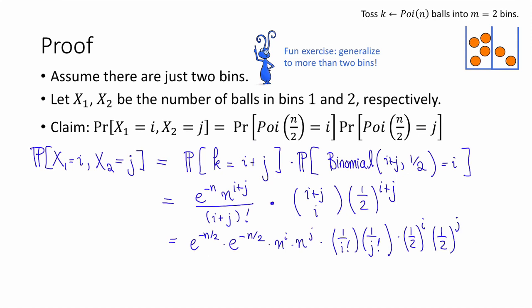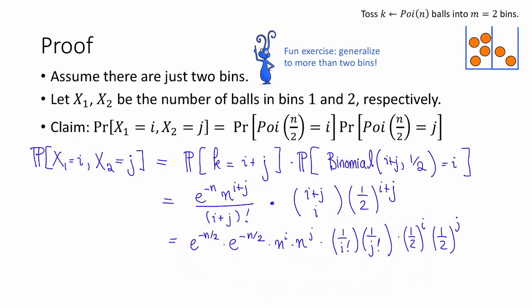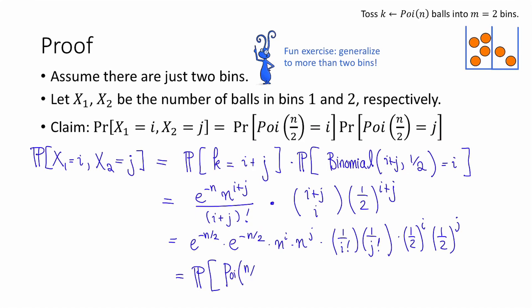Now we can simplify this expression. I'm going to write e to the minus n as e to the minus n over 2 times e to the minus n over 2, then write n to the i plus j as n to the i times n to the j. Writing out the binomial coefficient, the i plus j factorials cancel, leaving 1 over i factorial times 1 over j factorial. And one half to the i plus j becomes one half to the i times one half to the j. We now see two Poisson probabilities: this equals the probability that a Poisson random variable with parameter n over 2 equals i times the probability that a Poisson random variable with parameter n over 2 equals j. This proves the claim.